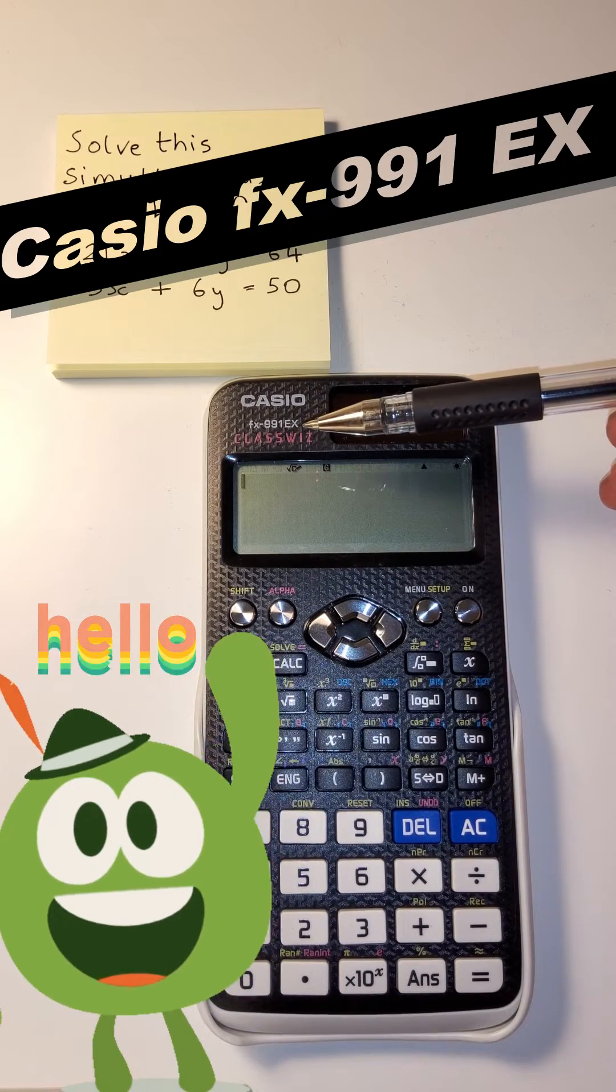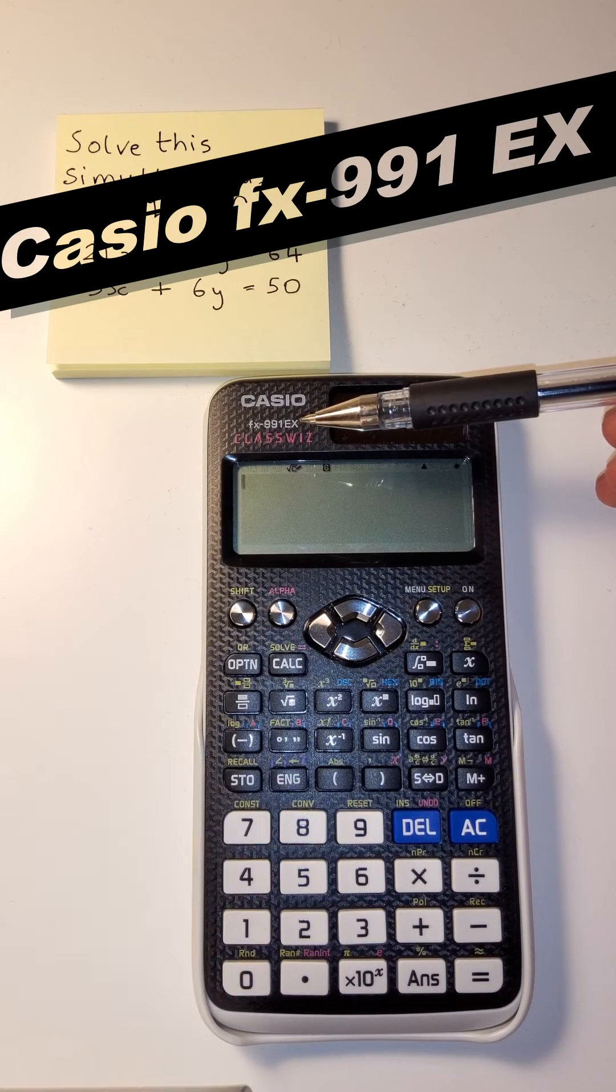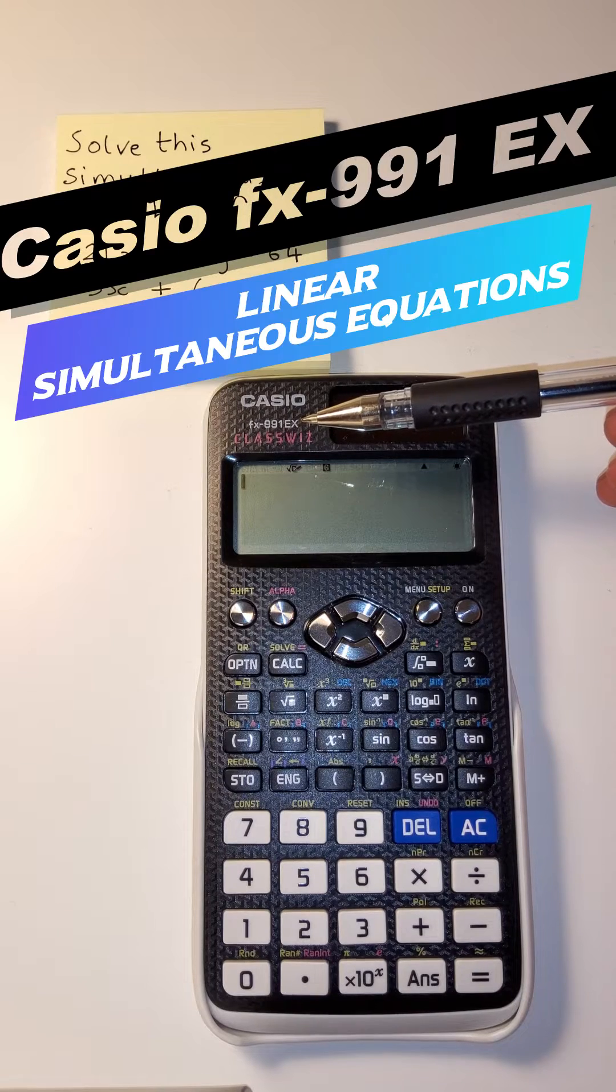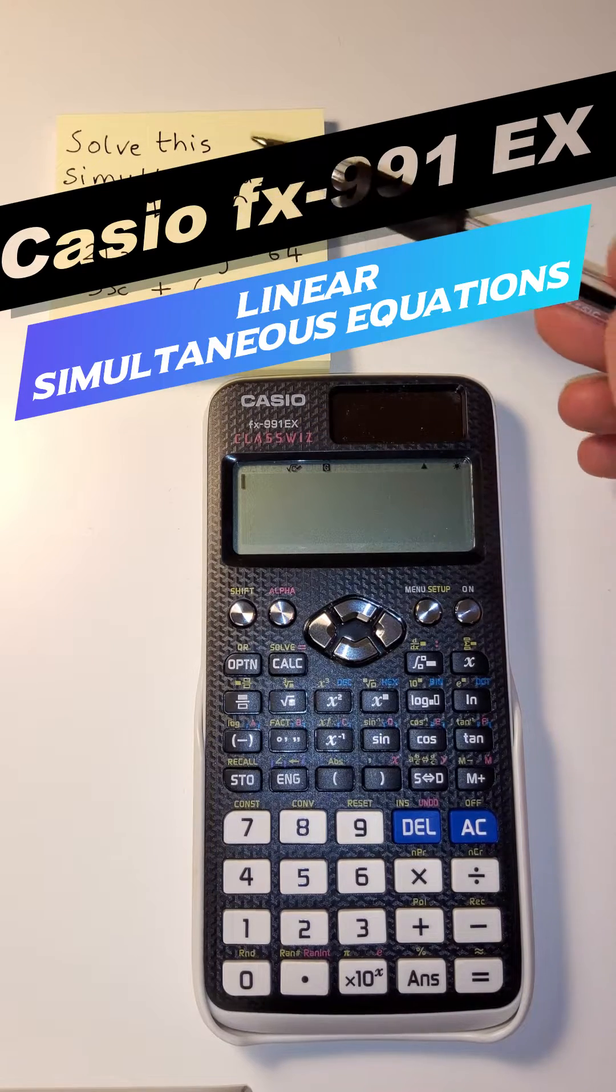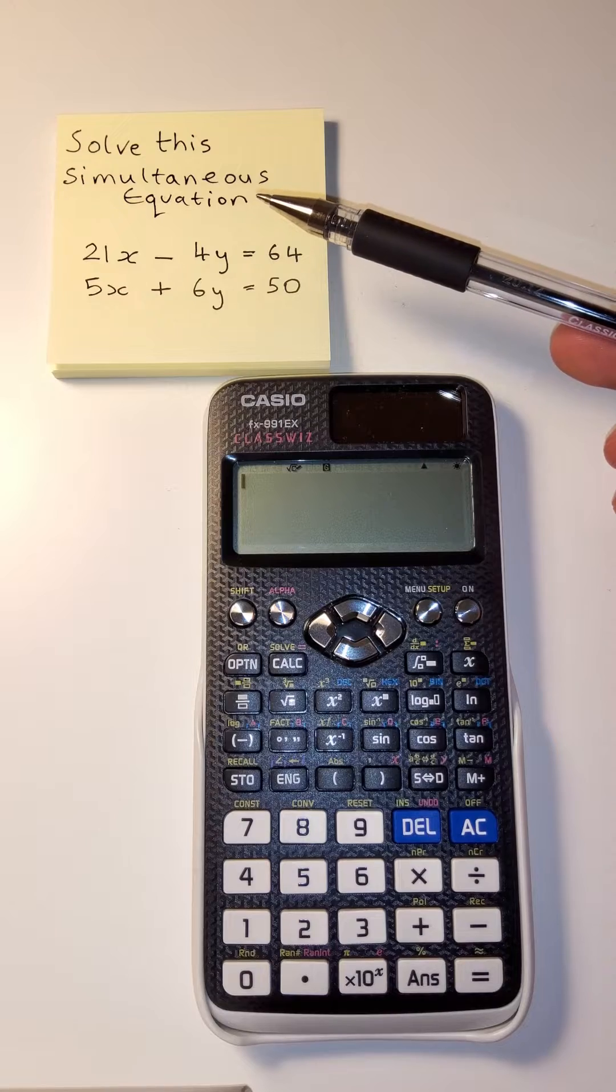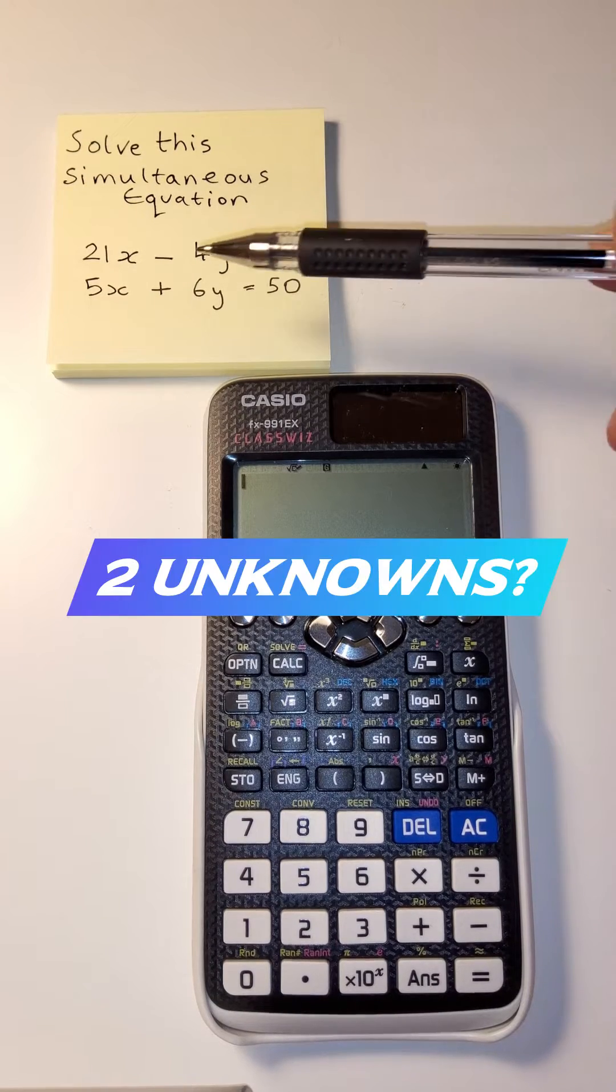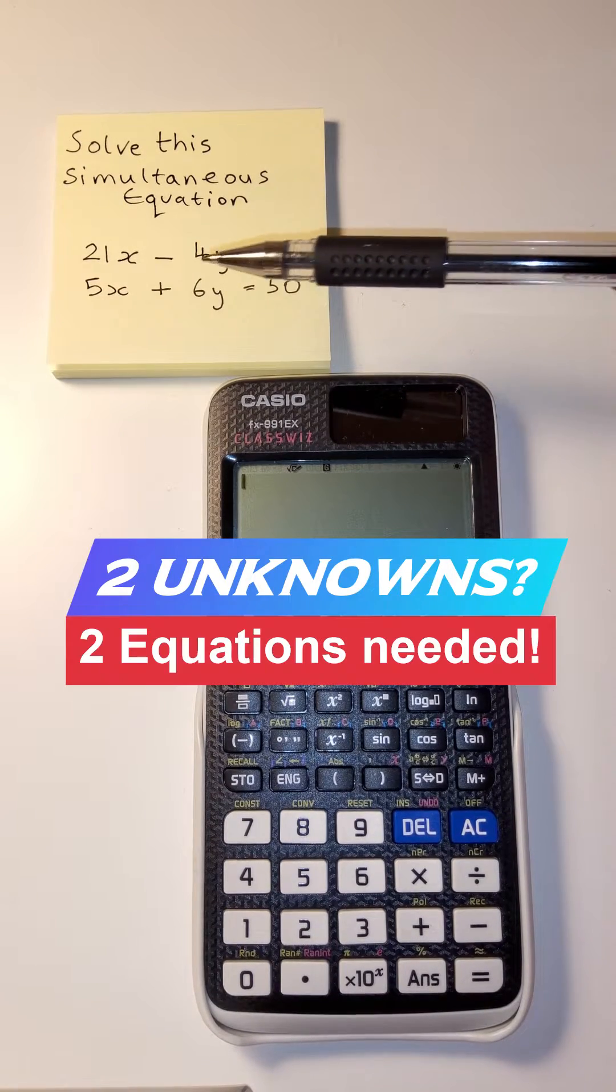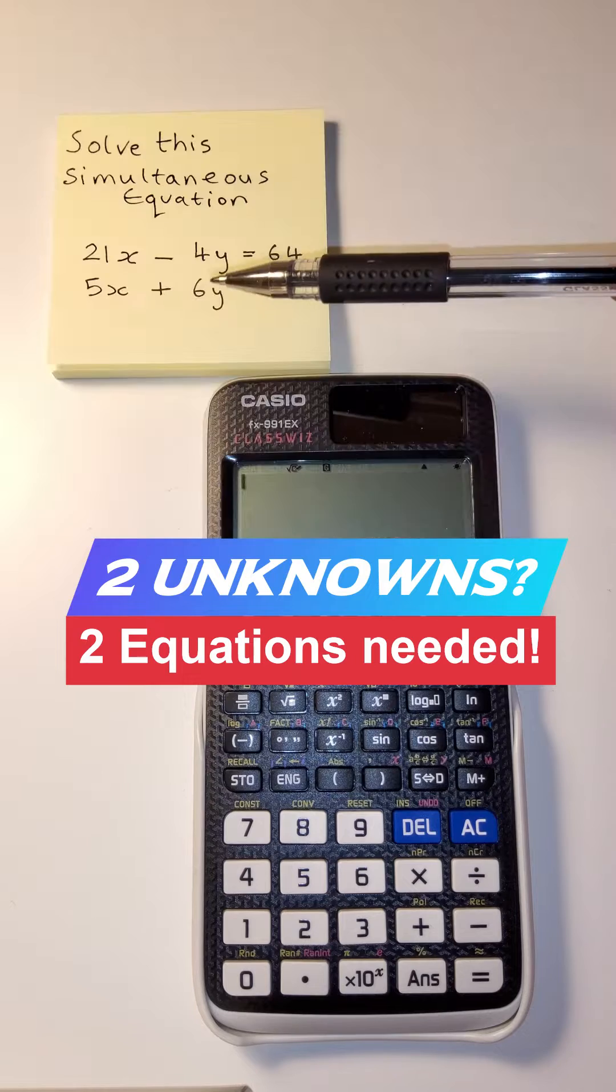Hey guys, we're looking at the tutorial for the Casio FX991EX model and we're looking today at solving this simultaneous equation. So if you have two unknowns, you're going to need two sets of equations to solve it.